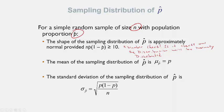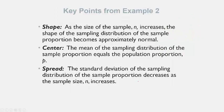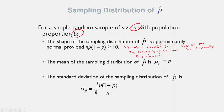The mean of the sampling distribution of p-hat, denoted mu sub p-hat, equals the population proportion P. So if the average is 0.42, it equals whatever the population proportion is. The standard deviation of the sampling distribution, sigma sub p-hat, equals the square root of P times (1 minus P) divided by n. This is also called the standard error of the sample proportion.